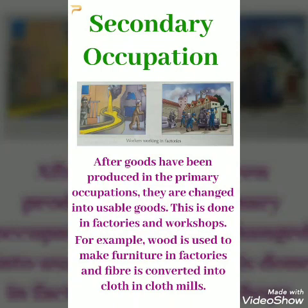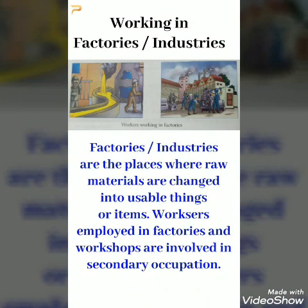This is done in factories and workshops. For example, wood is used to make furniture in factories, and fiber is converted into cloth in cloth mills. Factories or industries are the places where raw materials are changed into usable things or items. Workers employed in factories and workshops are involved in secondary occupation.